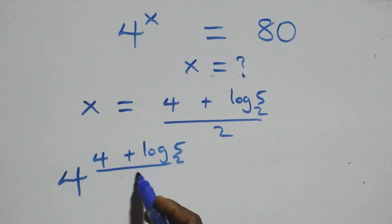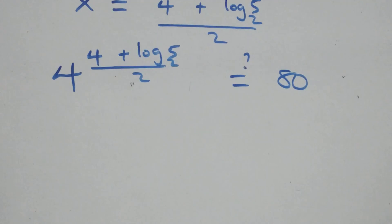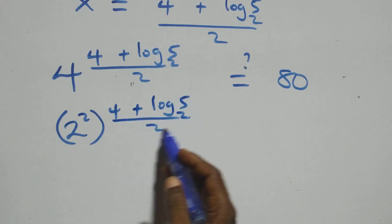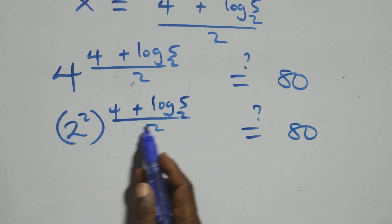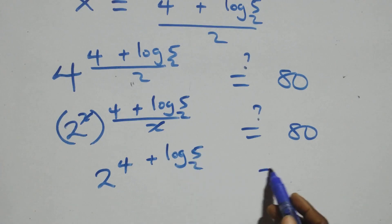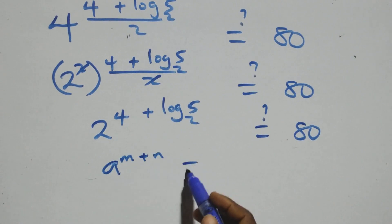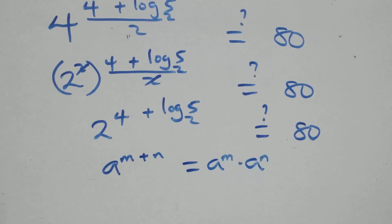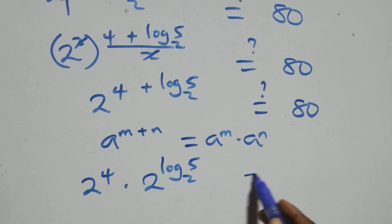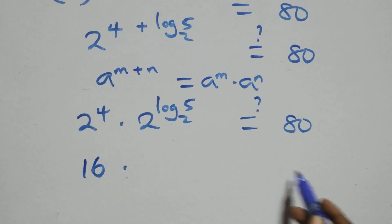We get 4 raised to the power (4 plus log 5 base 2) all over 2, and this should equal 80. We rewrite 4 as 2 squared, raised to the power (4 plus log 5 base 2) all over 2. The 2 in the power multiplies with the denominator 2, and they cancel, leaving 2 raised to the power 4 plus log 5 base 2, which equals 80. Applying the index rule, 2 raised to power 4 gives 16, times 2 raised to power log 5 base 2.